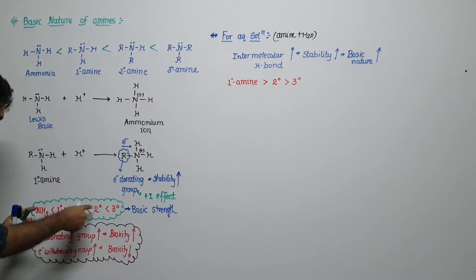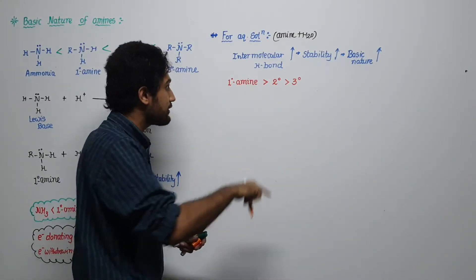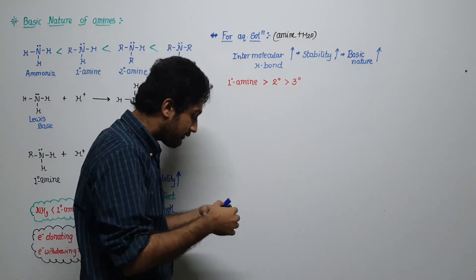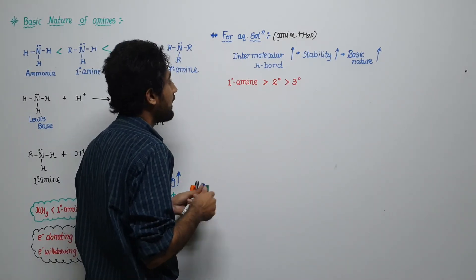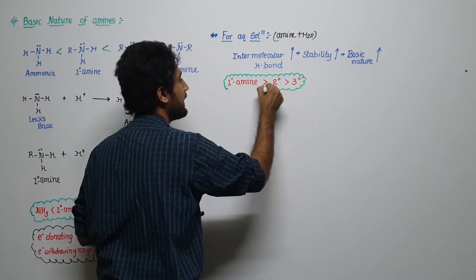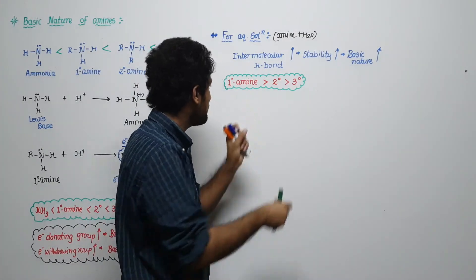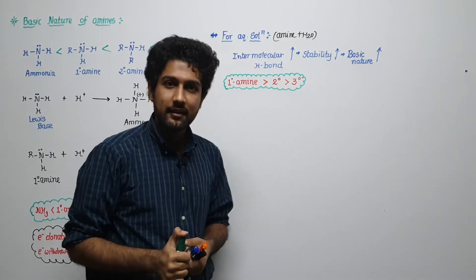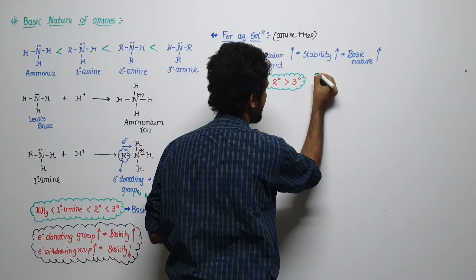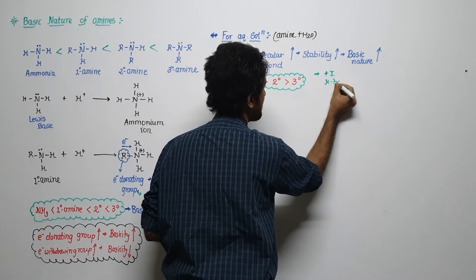Notice — this is completely reversed from the non-aqueous case! In the non-aqueous case, primary amine had least basicity and tertiary had most. In aqueous solution, primary amine has the highest basic nature, then secondary amine, then tertiary amine. So always check whether the question specifies aqueous solution or not. Three effects matter: +I effect, hydrogen bond effect, and repulsion.